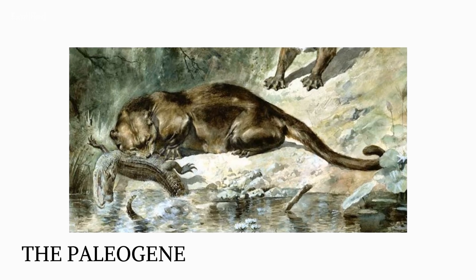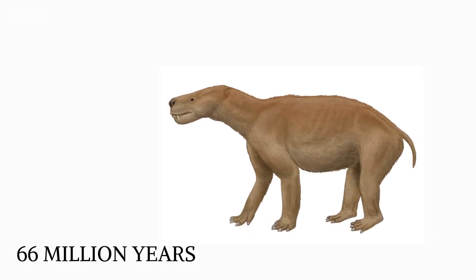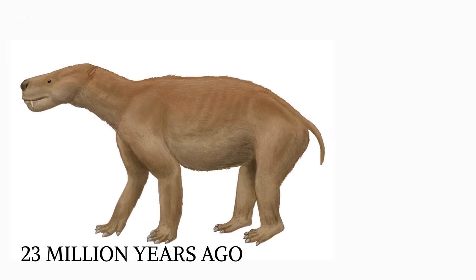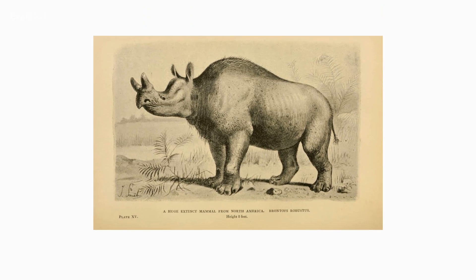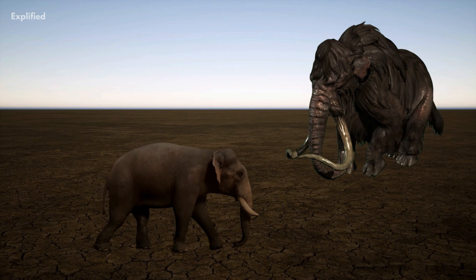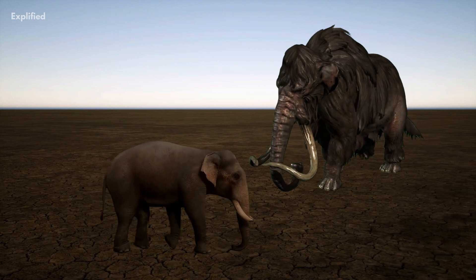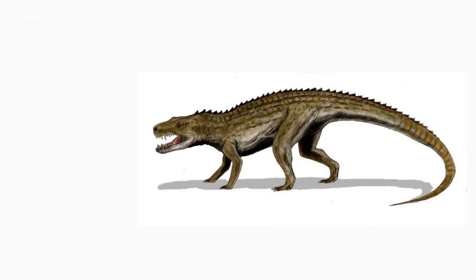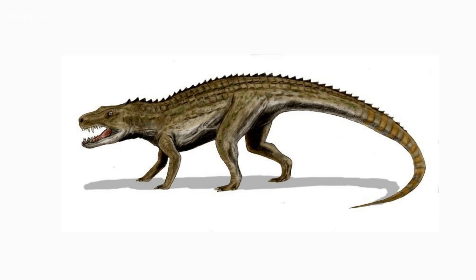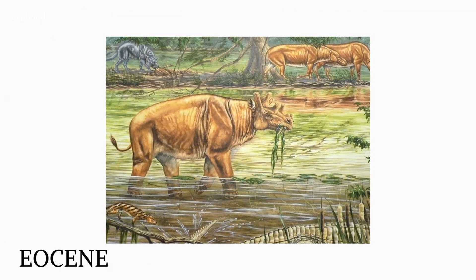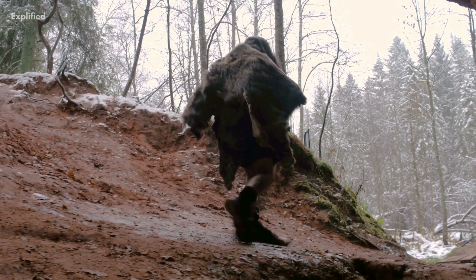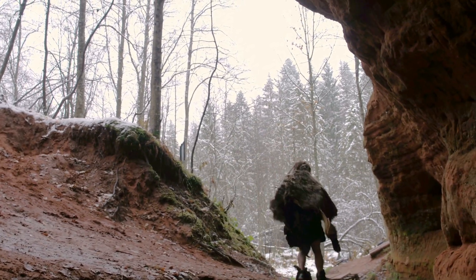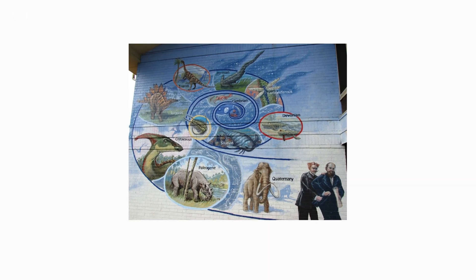The Paleogene is a geologic epoch that spanned 66 million years and ended 23 million years ago, marking the beginning of the Cenozoic era. The Paleogene, which lasted 43 million years, is most known for being the time when mammals developed from small, primitive species into a big collection of different animals following the Cretaceous-Paleogene extinction catastrophe. The Paleocene, Eocene, and Oligocene epochs make up this time period. We'll try to get an overview of the Paleogene era here.